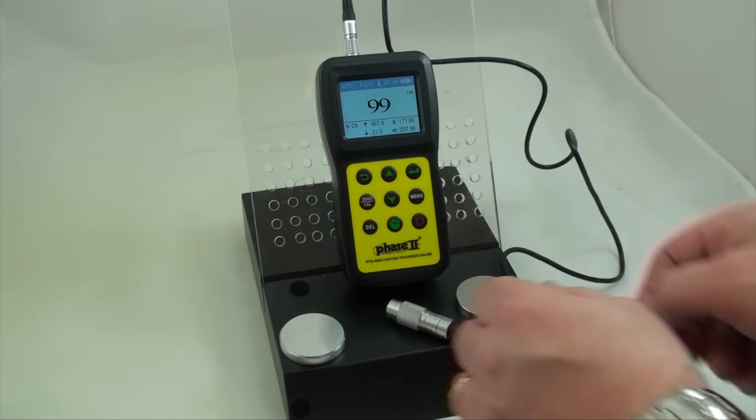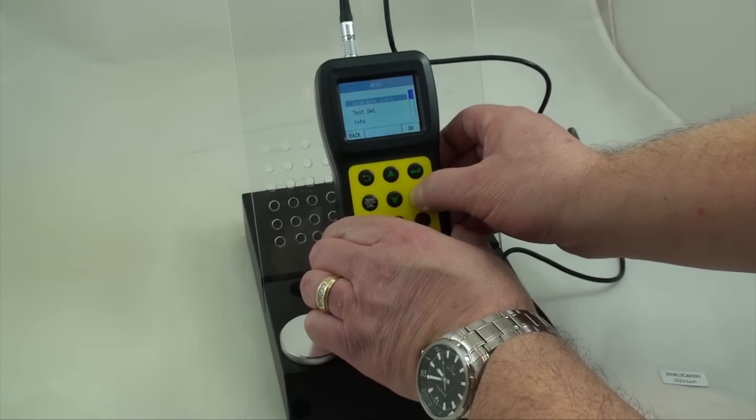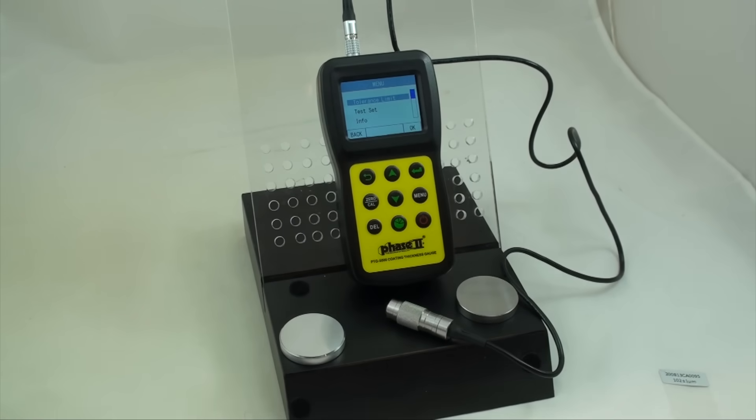Press the menu button to open the function selections. These selections include auto-save, which allows you to save each test after it's taken. Continuous mode is otherwise known as scan mode. Test mode is your probe selection point.